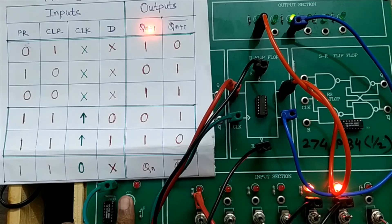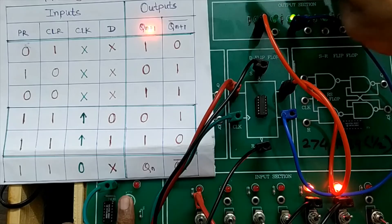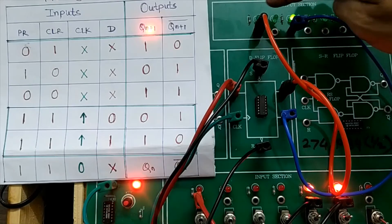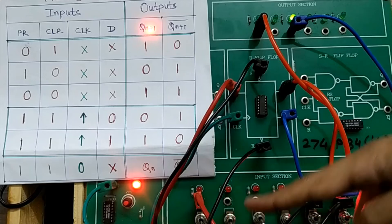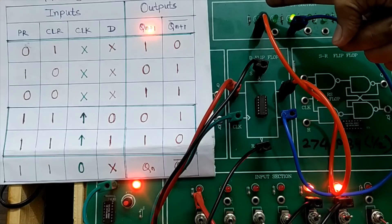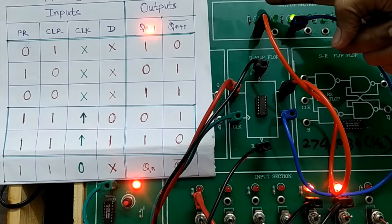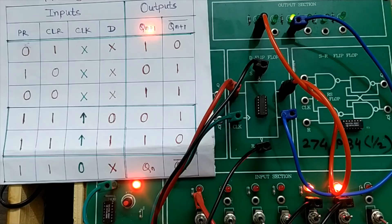Input is zero because this switch is in downward condition. When I release the clock signal, output should remain zero. You can observe that the output is zero. Whatever is the input, you get the same output at the output of D flip-flop at positive going edge of the clock signal.